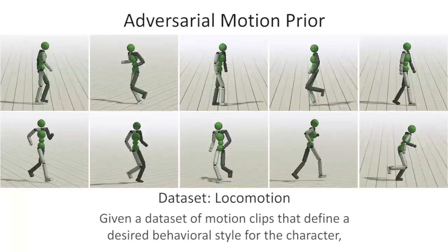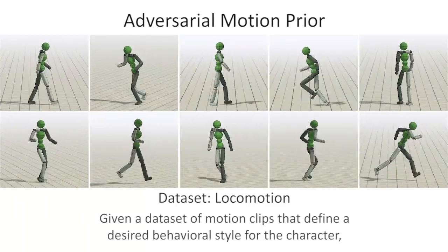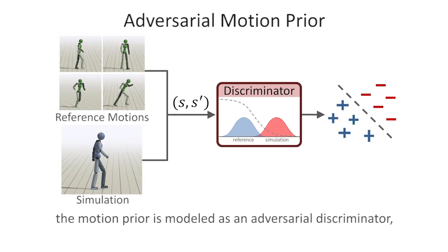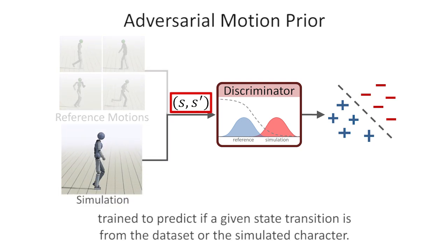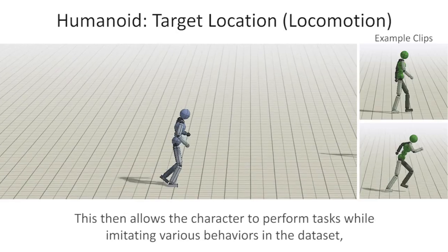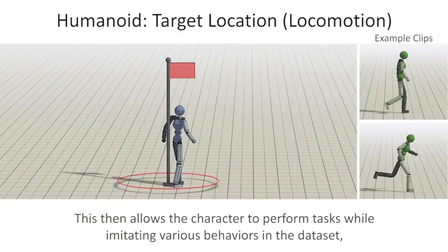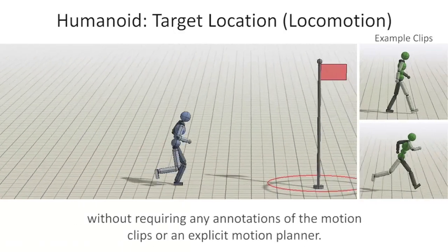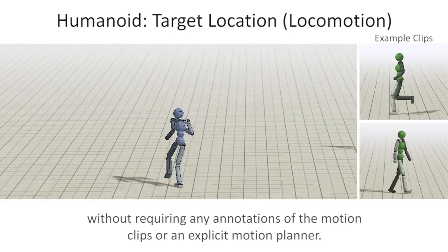Given a data set of motion clips that define a desired behavioral style for the character, the motion prior is modeled as an adversarial discriminator, trained to predict if a given state transition is from the data set or the simulated character. The predictions from the discriminator are then used as the style objective for training the policy. This allows the character to perform tasks while imitating various behaviors in the data set, without requiring any annotations of the motion clips or an explicit motion planner.